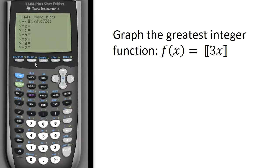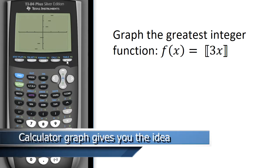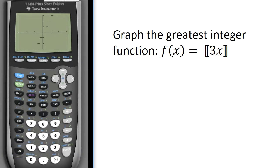Next, we'll have to consider a window, so I'm going to click window. Since it's 3x, I'll start with negative three to three with a scale of one on the x-axis, and negative three to three with a scale of one on the y-axis. Then I'm going to hit graph and see what that looks like. If you look at your textbook, this is the general indication of the graph — the calculator gives us a general picture, but I still have to determine which end of each step is a filled-in dot and which is an open dot.